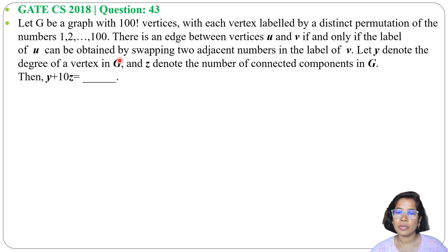Understand this line - how they will be adjacent. Let y denote the degree of a vertex in G, and z denotes the number of connected components in G. Then y plus 10z equals to blank. So here we need to find the value of y and z.